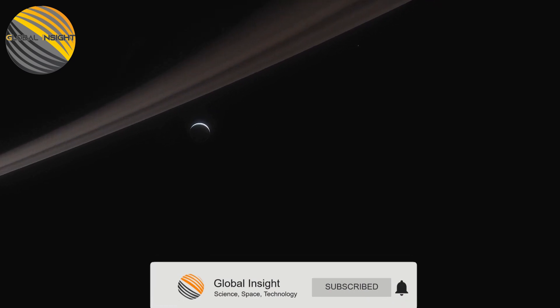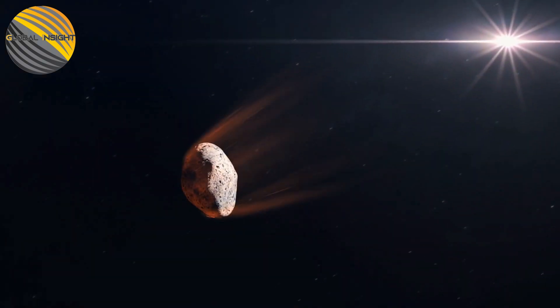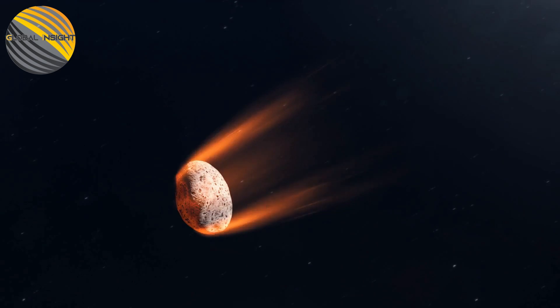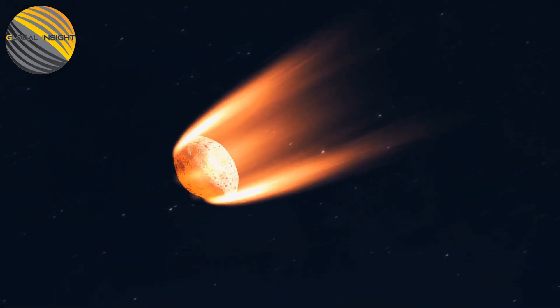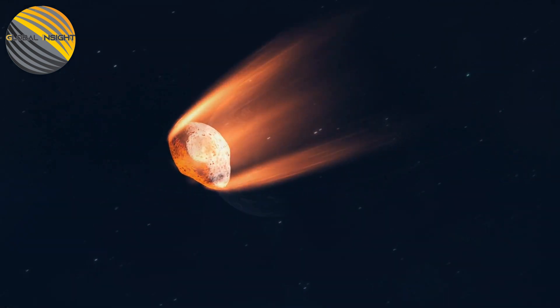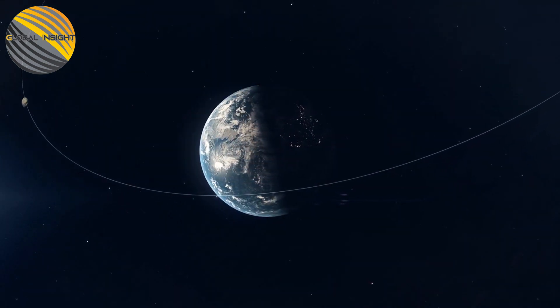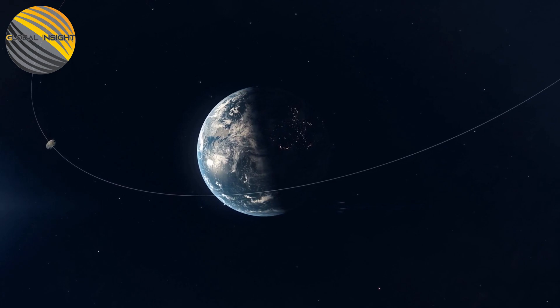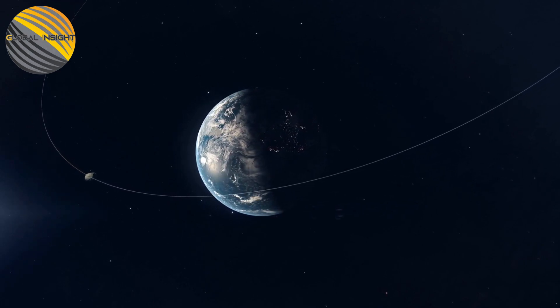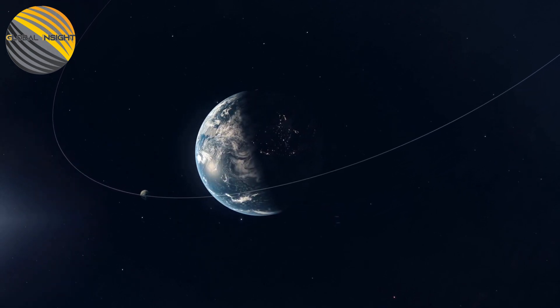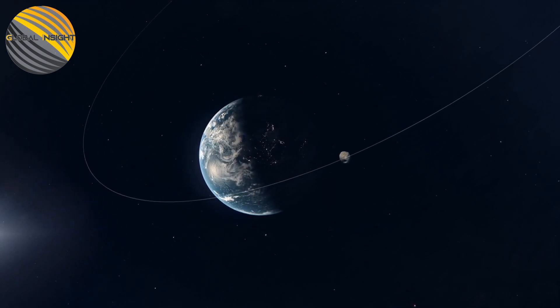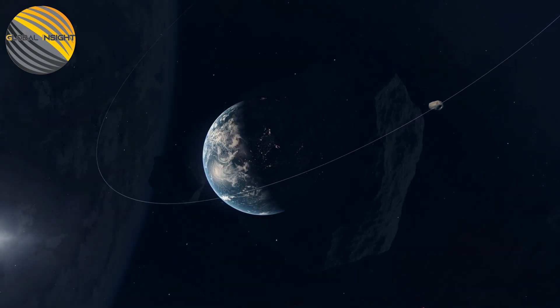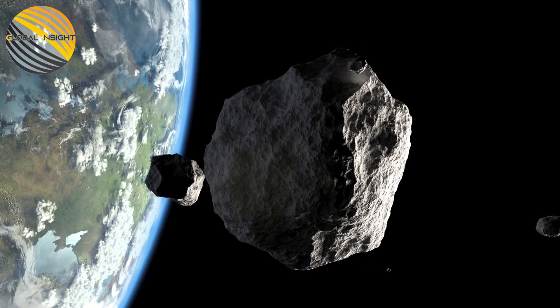A meteor the size of a bowling ball exploded over Vermont in March 2021, releasing 440 pounds of TNT. Even more shockingly, an explosion of a meteor in 2013 above Chelyabinsk, Russia, injured approximately 1,500 people and produced a blast roughly equivalent to between 400 and 500 kilograms of TNT, or 26 and 33 times the amount of energy released by the Hiroshima bomb.